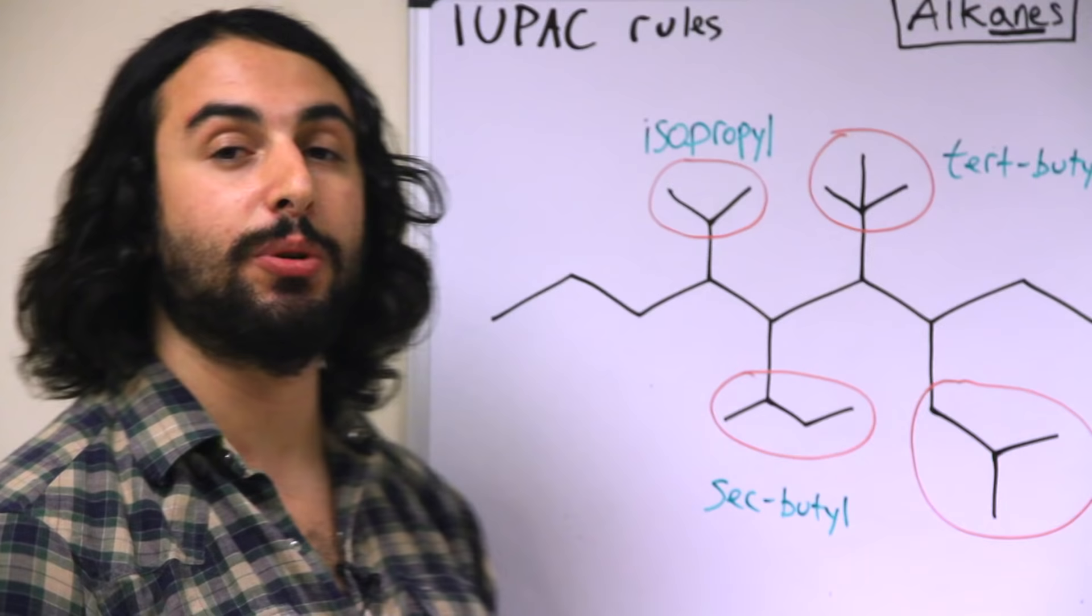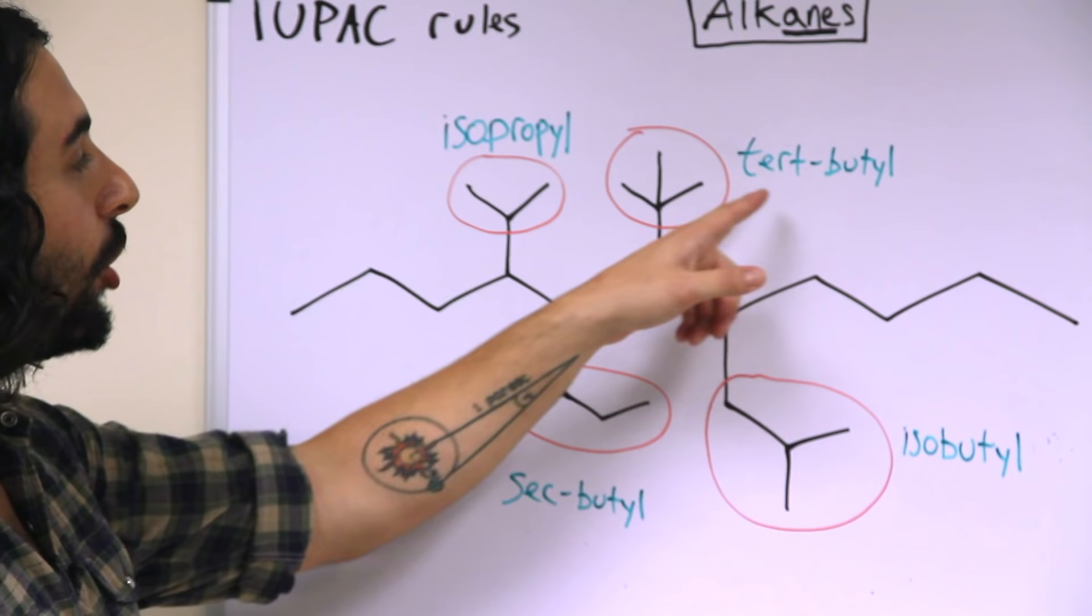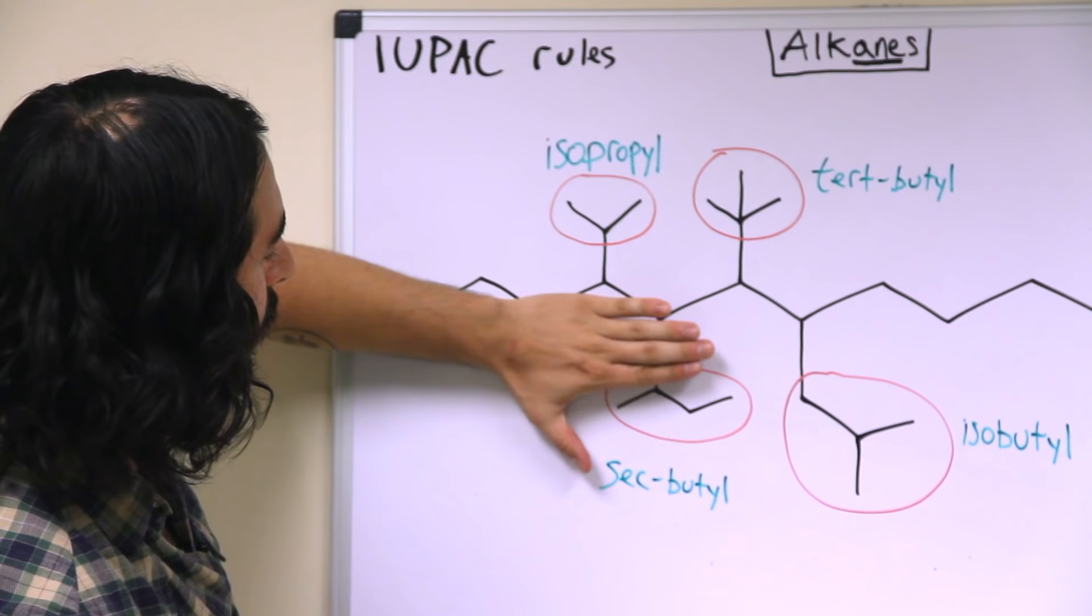And now we have a couple of butyl alkyl substituents. The sec-butyl group is a four carbon substituent and it is connected by one of the middle carbons, whereas the tert-butyl group is connected in this fashion, and the isobutyl group is connected in that fashion.